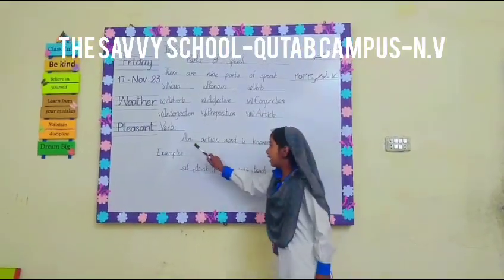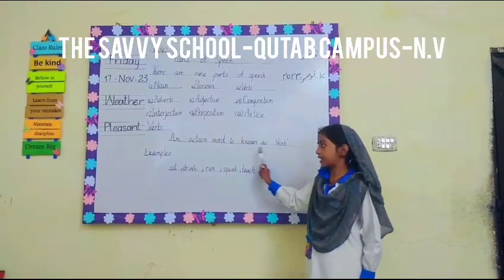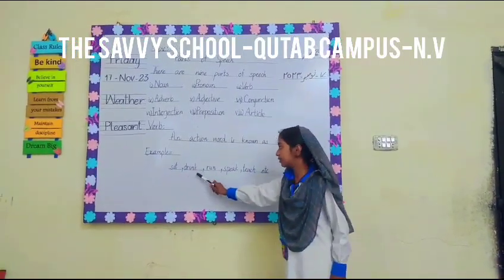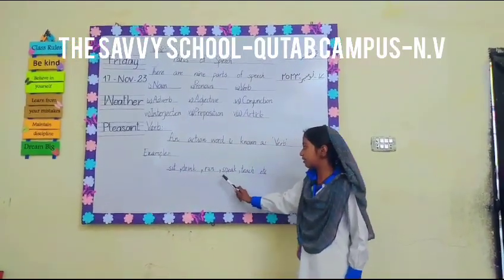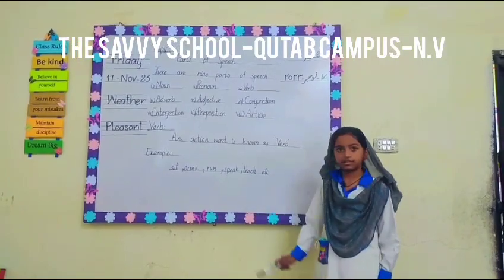Verb. An action word is known as a verb. For example: sit, drink, run, speak, and teach, etc.